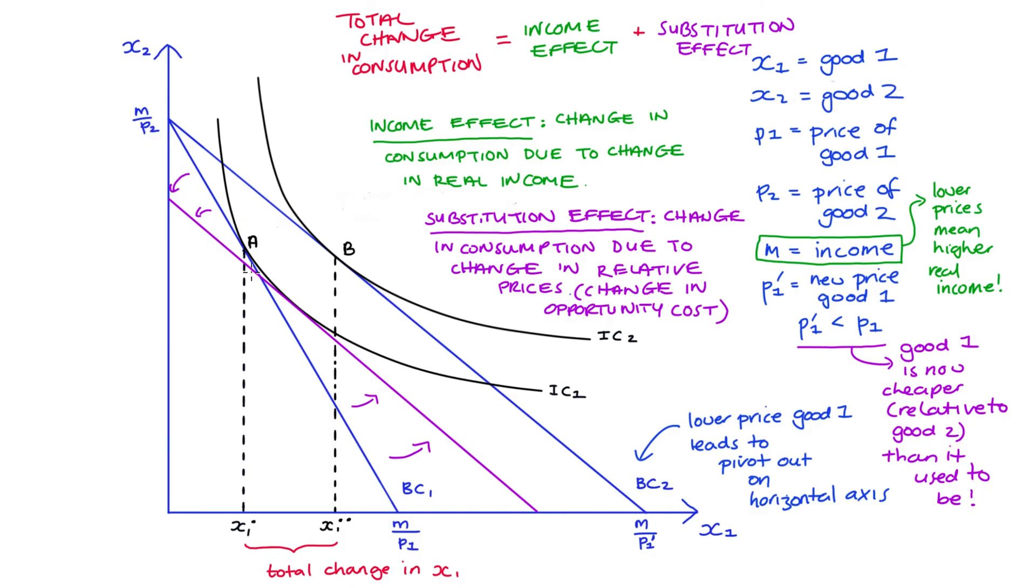Now this will give us a new point of tangency and a new optimal bundle I'll call it bundle C. The consumption of good one in this bundle is equal to x1 prime. Now the change in consumption from x1 star to x1 prime, that will be our substitution effect, and essentially again what we're trying to do is just isolate the effect on our consumption of just changing the relative prices.